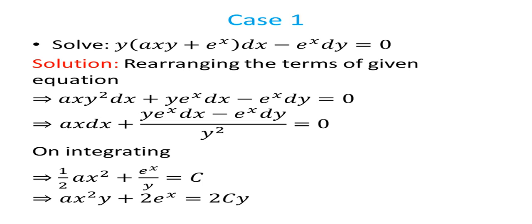Now we discuss the examples. Case 1: y(axy + e^x) dx minus e^x dy equal to 0. We rearrange the terms as axy² dx plus y·e^x dx minus e^x dy equal to 0. Dividing both sides by y², we get ax dx plus (y·e^x dx minus e^x dy) upon y² equal to 0. Integrating, we get (1/2)ax² plus e^x upon y equal to c, which simplifies to ax²y + 2e^x equal to 2cy, the required solution.